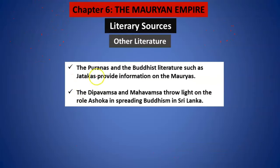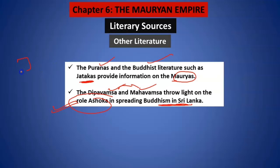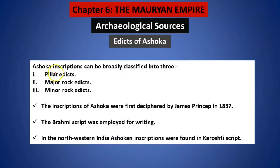Apart from those two resources — Indica and the book written by Chanakya — there are some other resources also, like in the Puranas it is also mentioned, and in the Buddhist literatures also, like Jatakas, it is mentioned about the Mauryas. Dipvamsa and Mahavamsa, which were also written by Buddhists in Sri Lanka when Buddhism was spreading there, also mention the role of Ashoka.